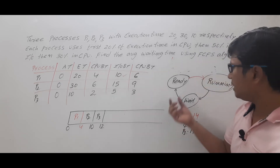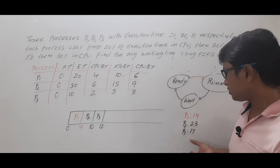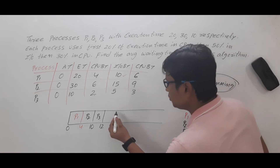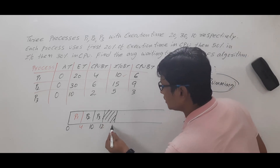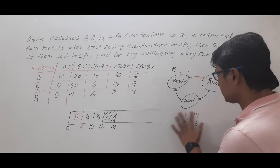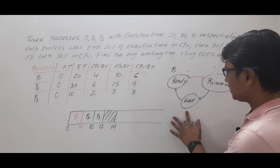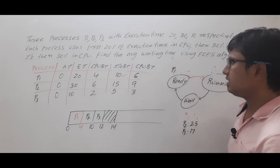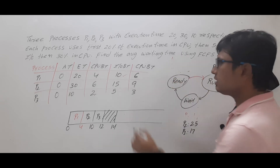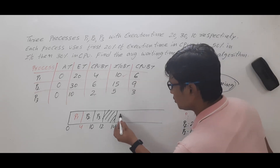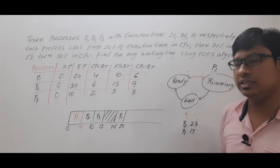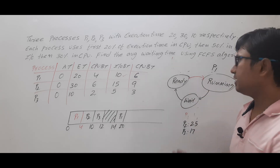At 12 units of time, no process is available in the ready state — all three processes are in the wait state. So the CPU is idle until 14 units of time. At 14 units of time, process P1 comes back to the ready state. Since it is alone, it will be scheduled to the running state. It needs 6 units of CPU time, so at 14 plus 6 equals 20 units of time, process P1 completes its task and goes to the terminated state.